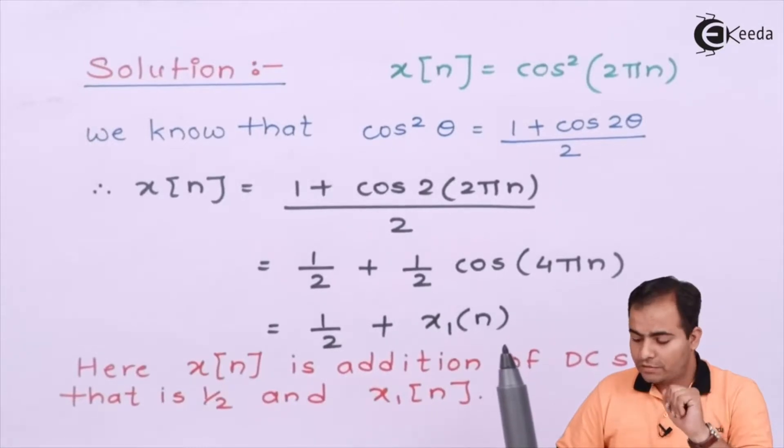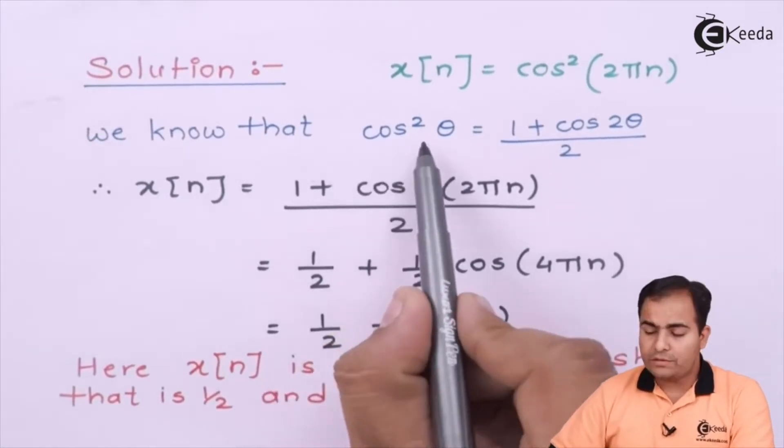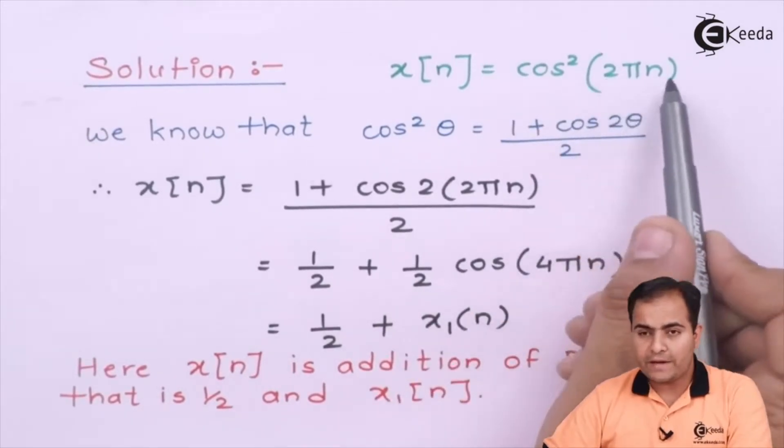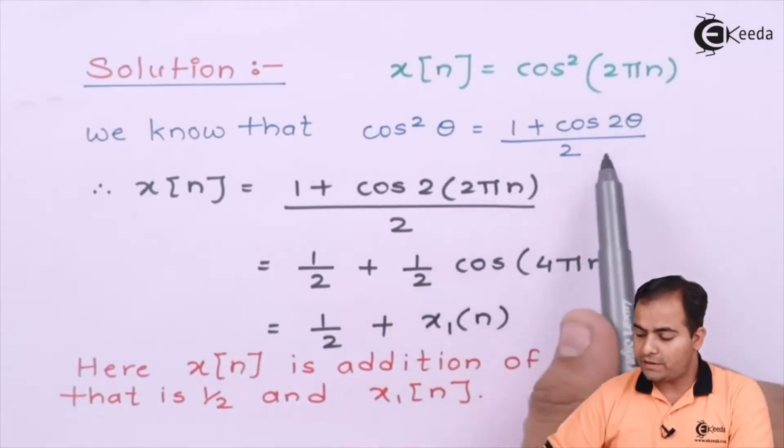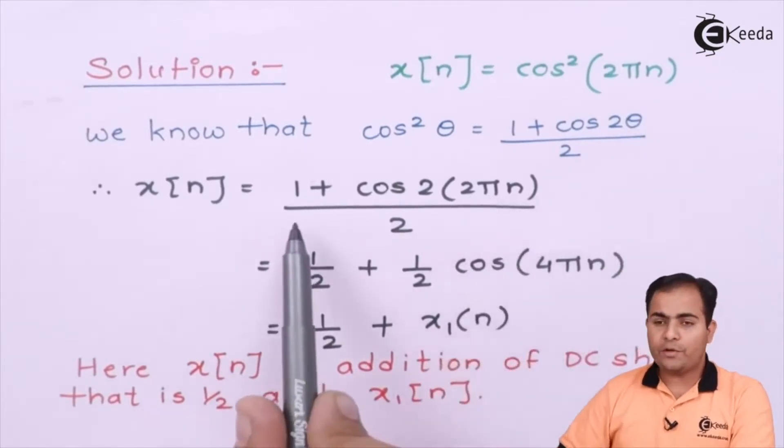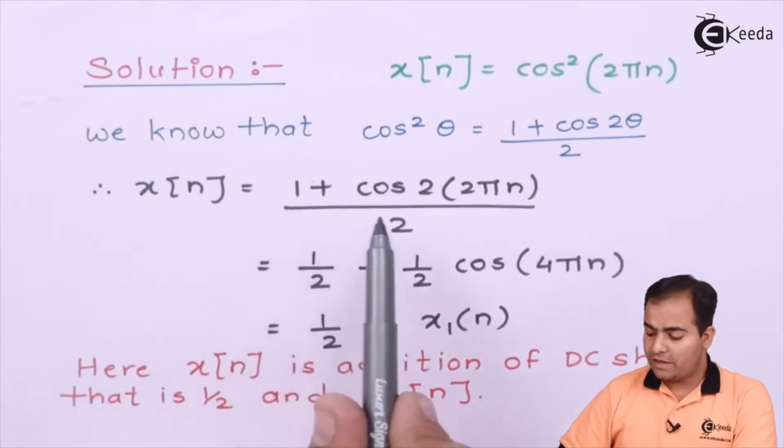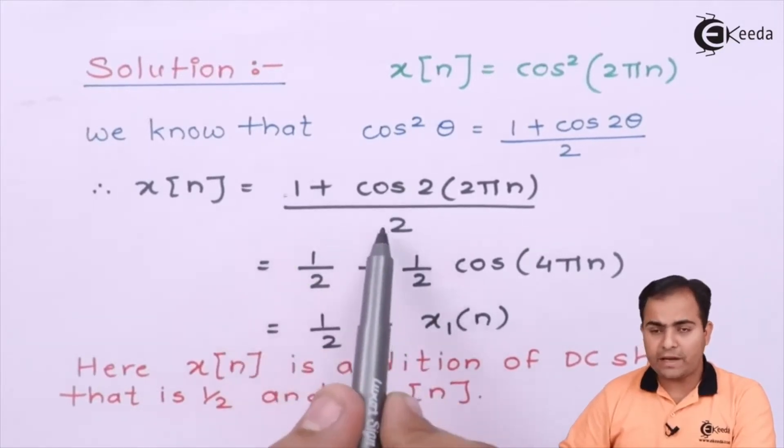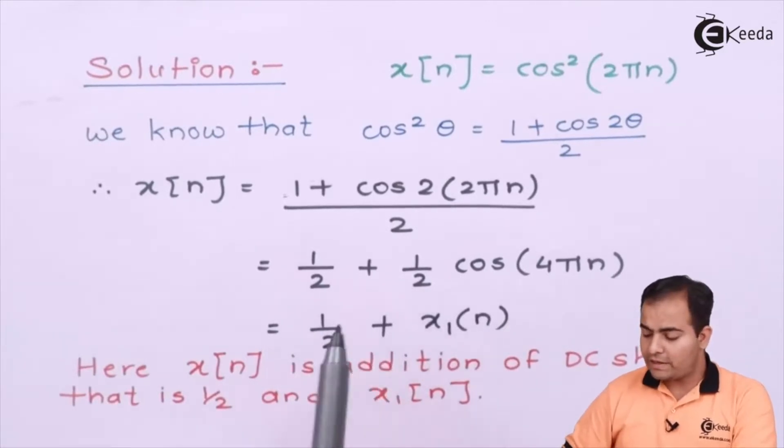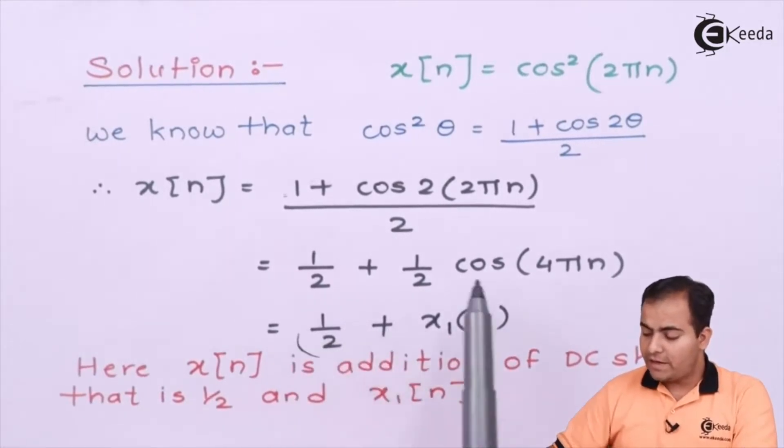Now come to the point. We'll use this formula in our question. My theta is 2πn, so I have just substituted theta as 2πn in my formula. I'm going to change this base. We know that (a + b)/2 can be divided as a/2 + b/2.